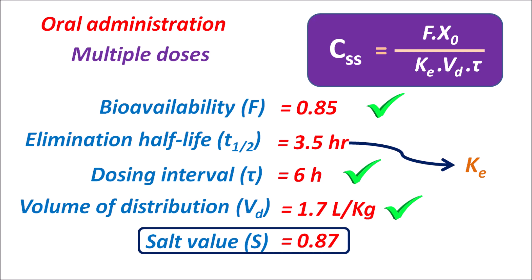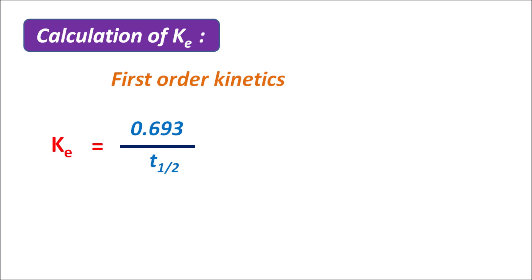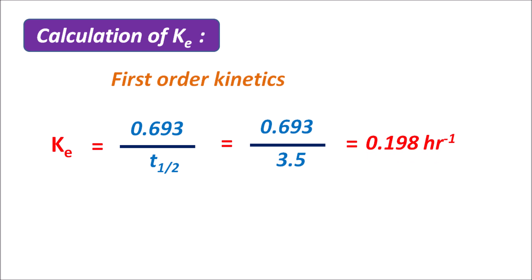To calculate Ke: since elimination follows first order kinetics, Ke = 0.693 / T½ = 0.693 / 3.5. On calculating, we get the Ke value as 0.198 hr⁻¹. So the elimination rate constant is 0.198 hr⁻¹.